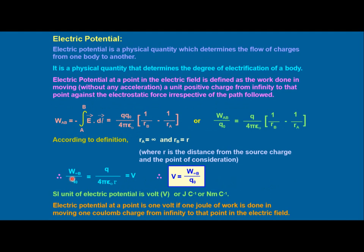Now we are discussing electric potential. Before studying electric potential, we must understand what potential energy is. Whenever we perform any type of work done on a body, that work done is stored in the form of potential energy. When we calculate the potential energy per unit quantity, it is called potential. For example, electric potential is electric potential energy per unit charge, gravitational potential is gravitational potential energy per unit mass, and magnetic potential is magnetic potential energy per unit magnetization.